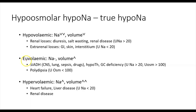Perhaps the most common cause of hypoosmolar hyponatremia is euvolemic hyponatremia, where on exam the patient is not obviously overloaded or dehydrated. The two main ways to get euvolemic hyponatremia are to have relatively too much antidiuretic hormone action, or to drink too much water in the setting of polydipsia. The most common cause of excess ADH is the syndrome of inappropriate antidiuretic hormone — SIADH — where lung pathologies, CNS pathologies, and physiological stress such as sepsis cause increased ADH production, leading to more free water retention and dilutional hyponatremia.